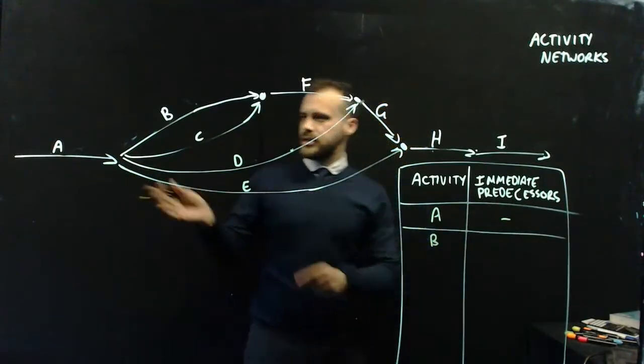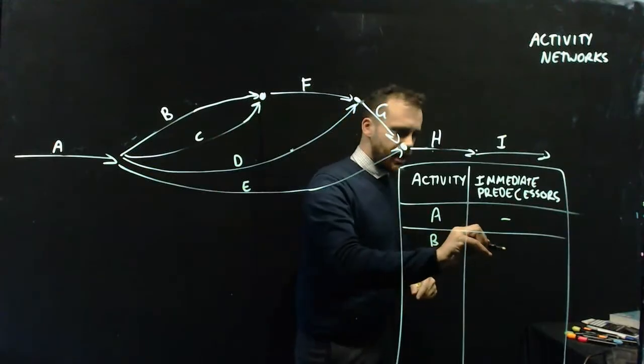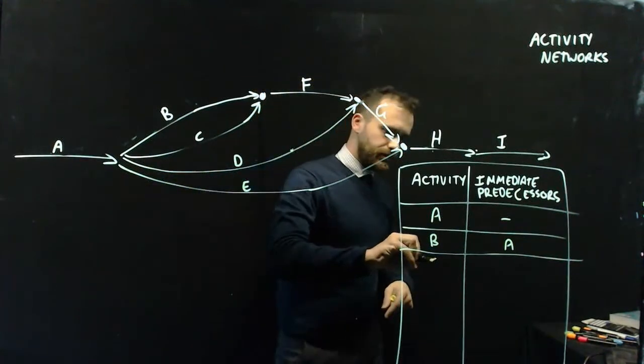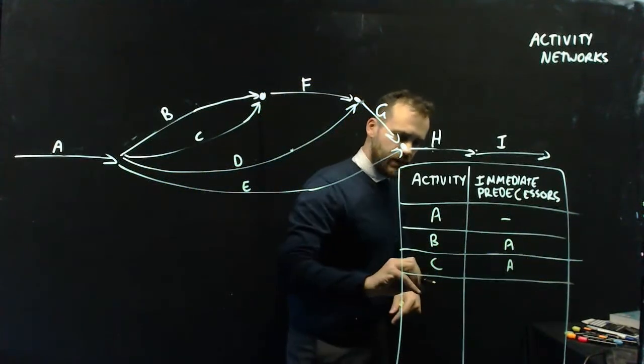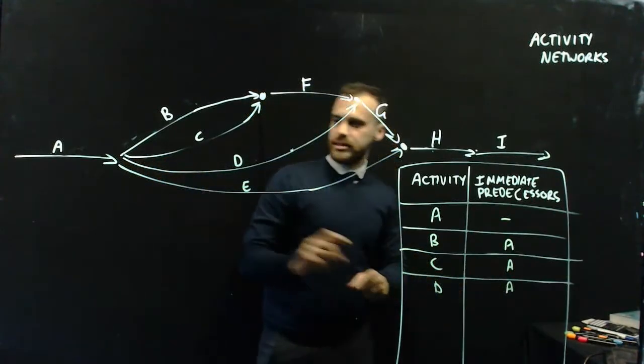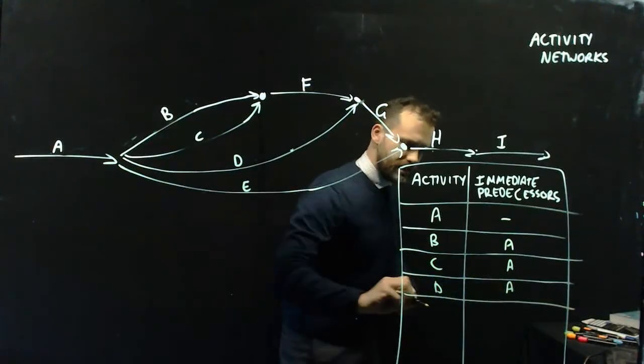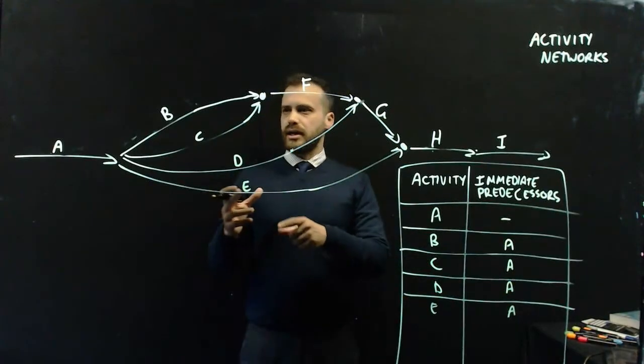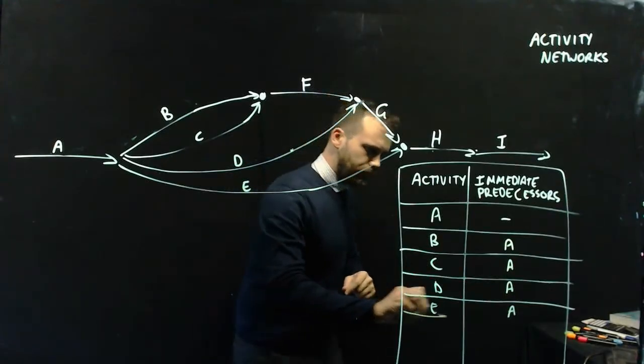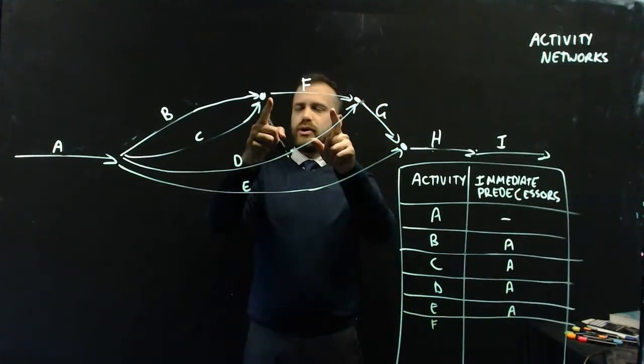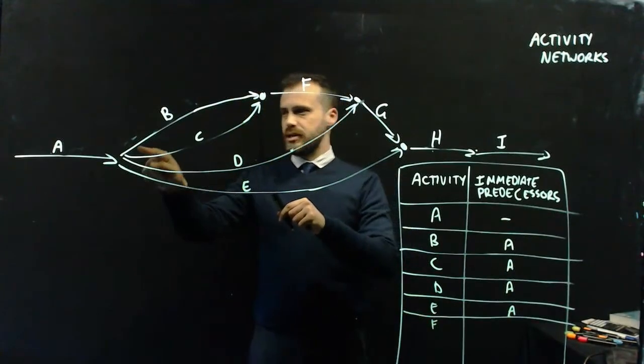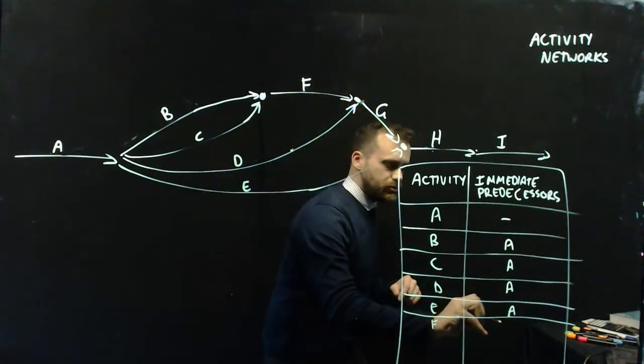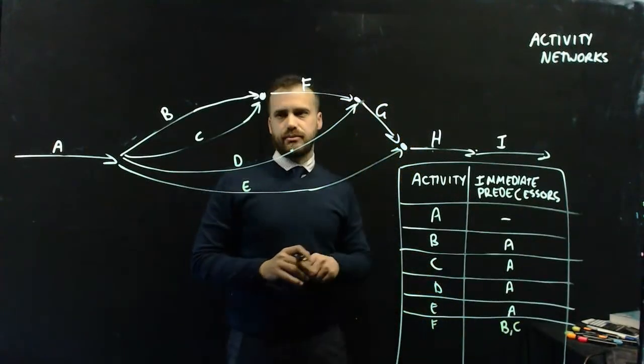Let's look at activity B. Does anything have to happen before B happens? Yes, A has to happen. A is B's immediate predecessor. What about C? Yes, A has to happen. And D, yes, A is the immediate predecessor there. And E, yes, A is the immediate predecessor there. We can see that A is the immediate predecessor to a lot of things. What about F? F has two immediate predecessors. B and C have to happen before F can happen.